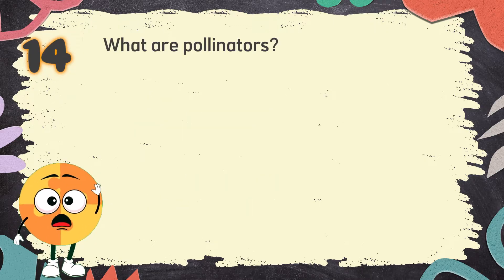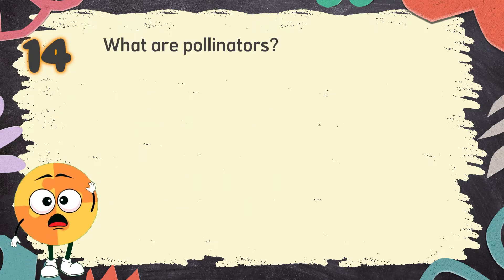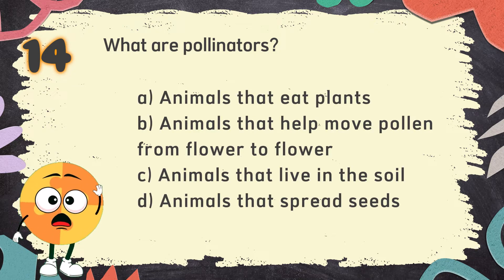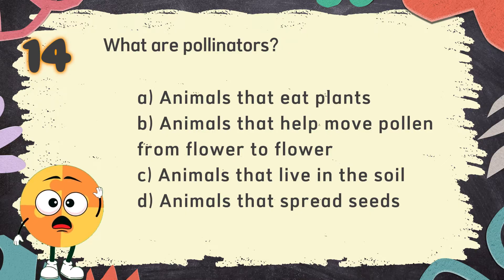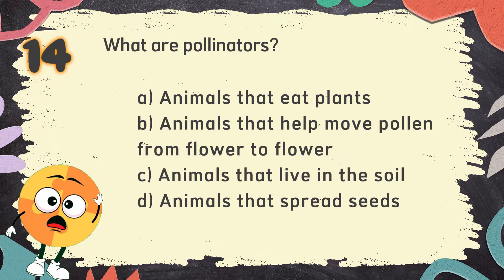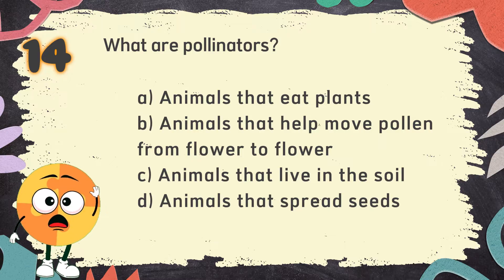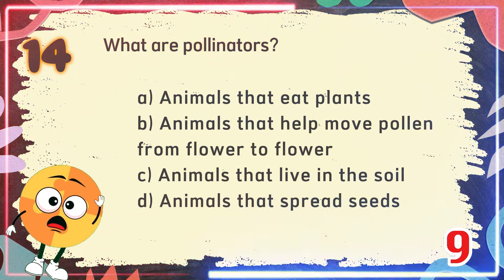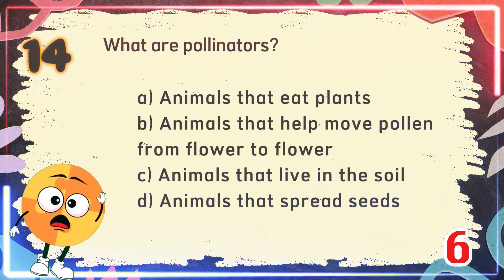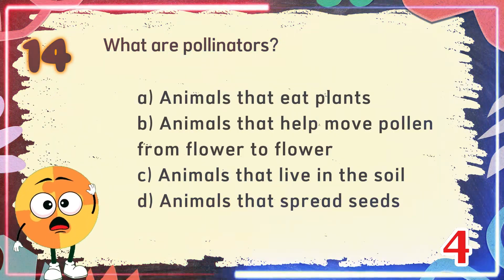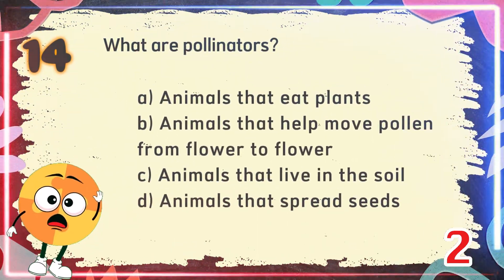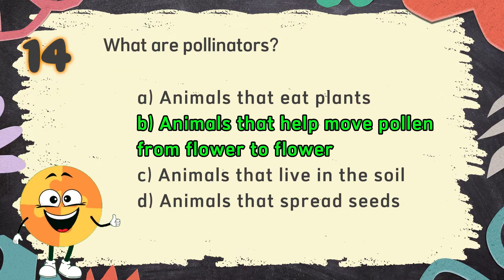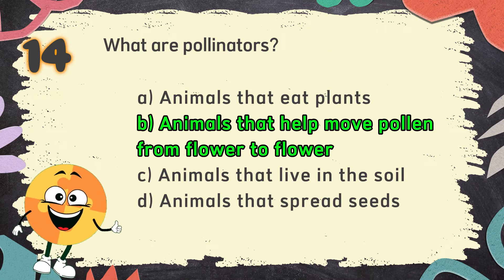Number 14: What are pollinators? The choices are: A. Animals that eat plants, B. Animals that help move pollen from flower to flower, C. Animals that live in the soil, D. Animals that spread seeds. The correct answer is B. Animals that help move pollen from flower to flower.